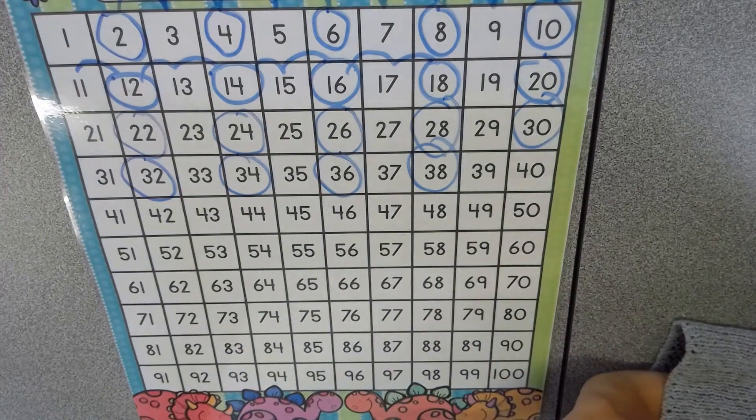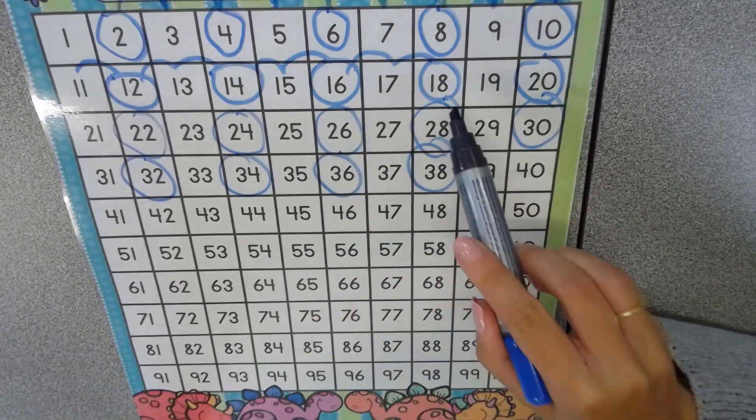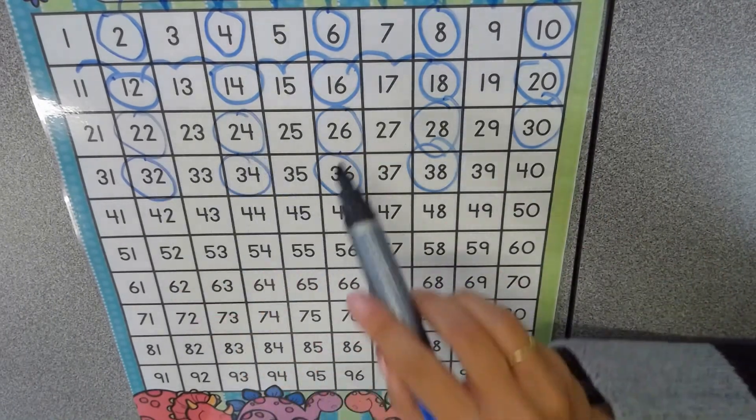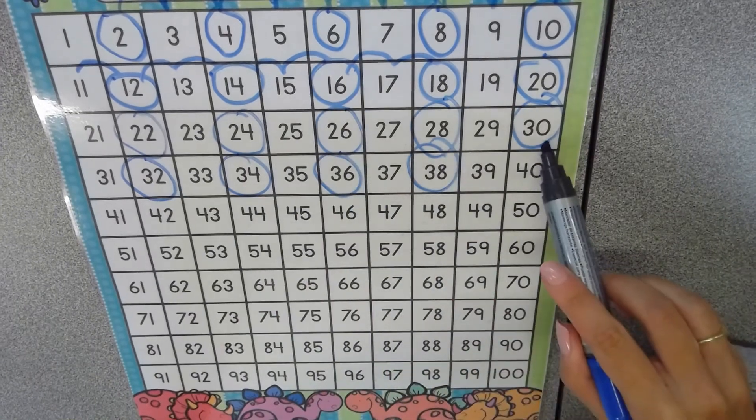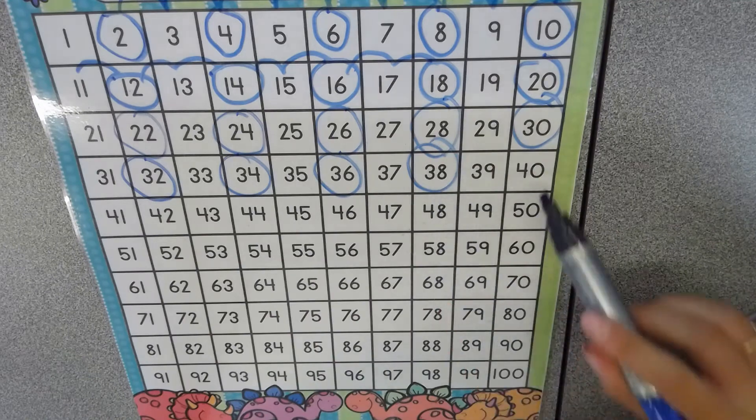And I can see as we follow the numbers that have been circled in this pattern that those numbers occur again and again. Two, four, six, eight, zero. Two, four, six, eight, zero. Two, four, six, eight and zero.